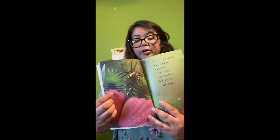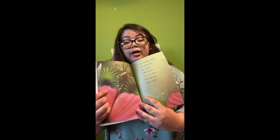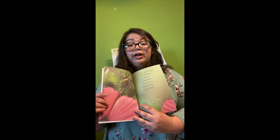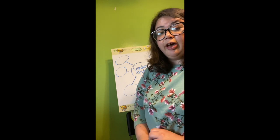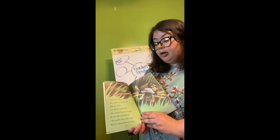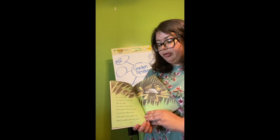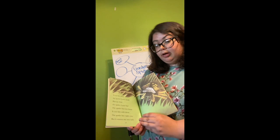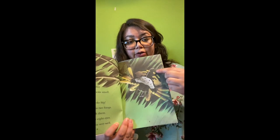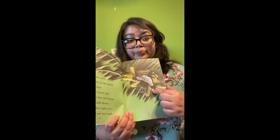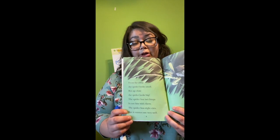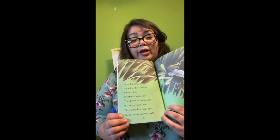Here is our picture of the garden spider with eight legs. Garden spiders having eight legs is a fact, and I will write that on our graphic organizer. I am going to write that garden spiders have eight legs. From far away, the spider looks small, but up close the spider looks big. The spider has two fangs and it can bite with them. The spider has eight eyes, but it cannot see very well. Here is our spider — up here are its eyes and down here are its fangs. This page has a lot of information, and I am going to write some of the facts down.